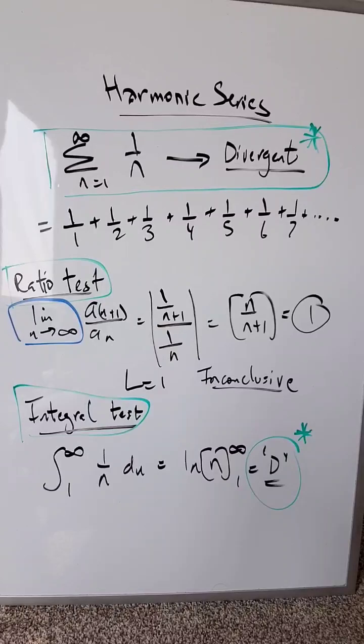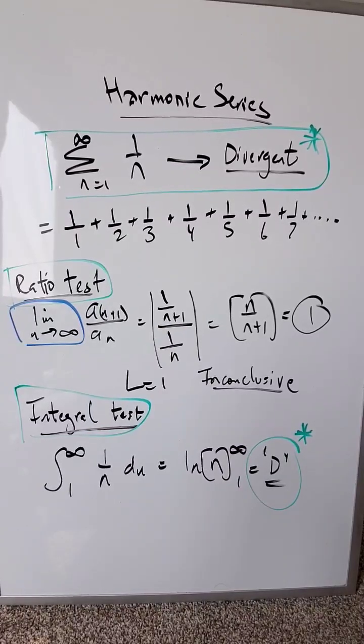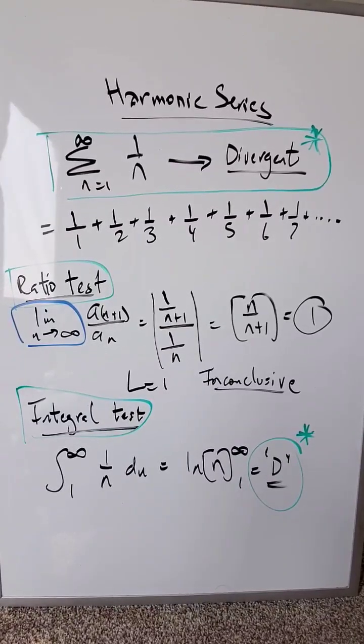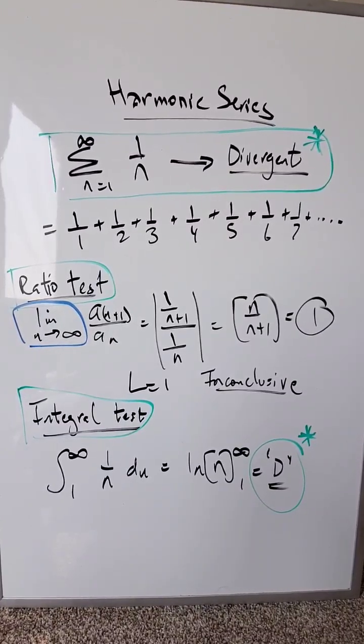It is known to be a divergent series, but when you open it up in terms of a series, you are looking at 1 over 1 plus 1 over 2 plus 1 over 3 and onwards.